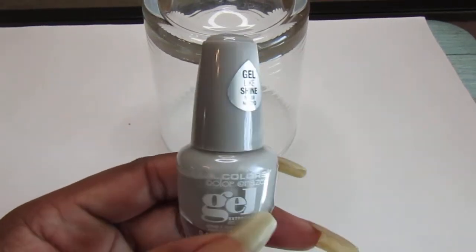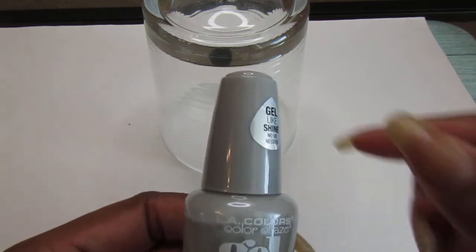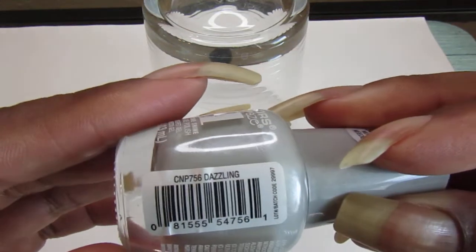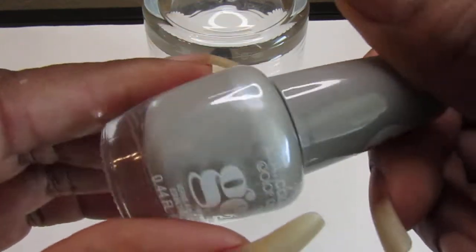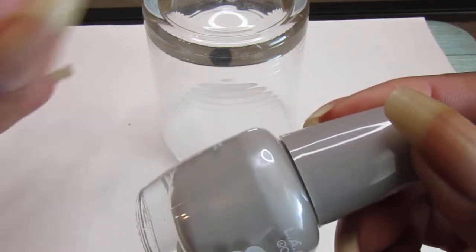Hello everyone, welcome back to my channel, welcome back to another swatch video. In this one I'm going to swatch my nails with this LA Colors gel, and it is called Dazzling. It is such a beautiful grayish polish.